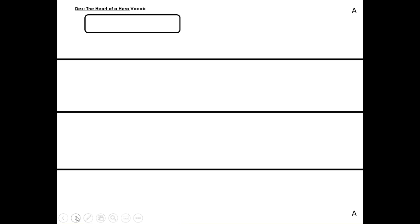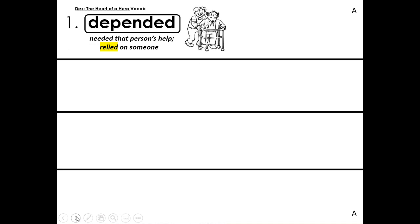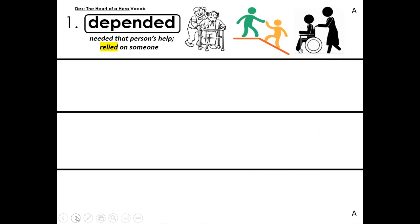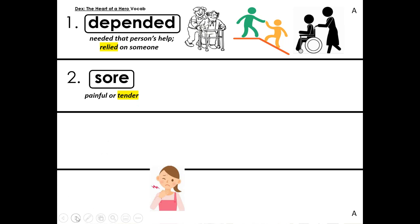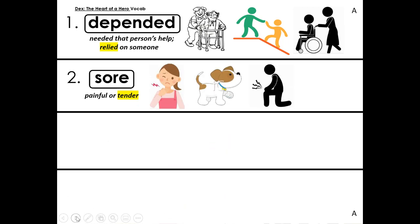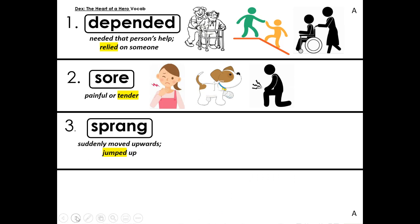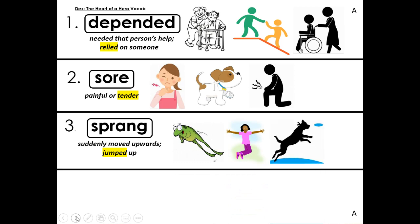Let's review our vocabulary words, because when you answer questions about the important parts of the story, you may use these words in your answer. Depended: needed that person's help, relied on someone — 'relied' is a synonym for 'depended.' Sore: painful or tender. Sprang: suddenly moved upward or jumped up — another word for sprang is jumped.